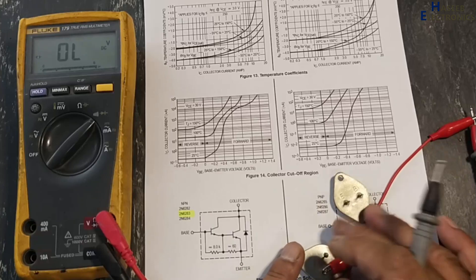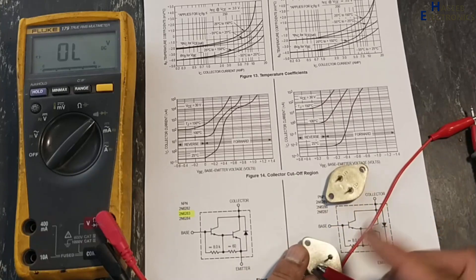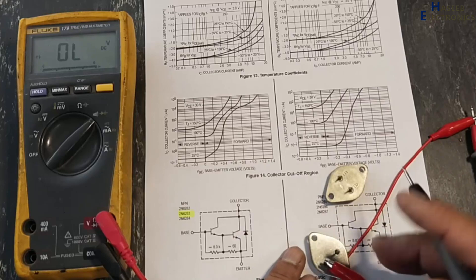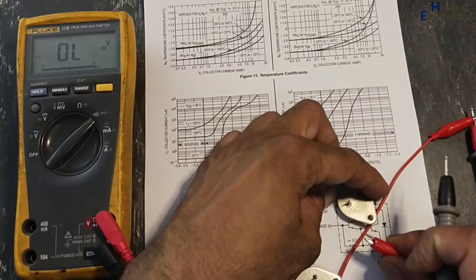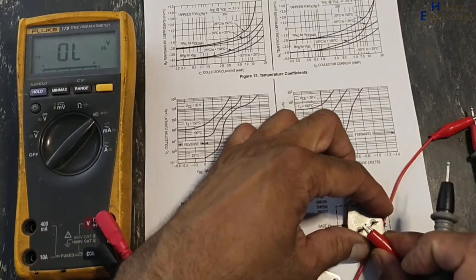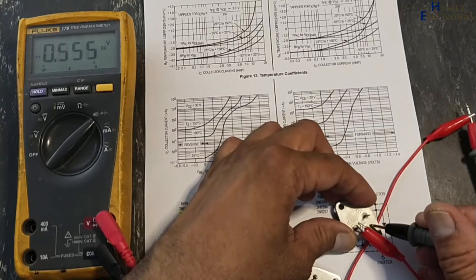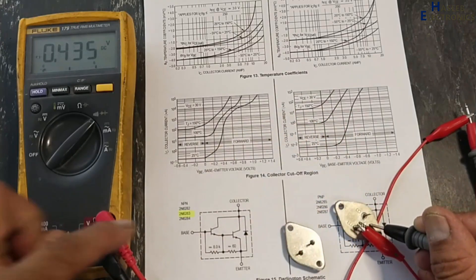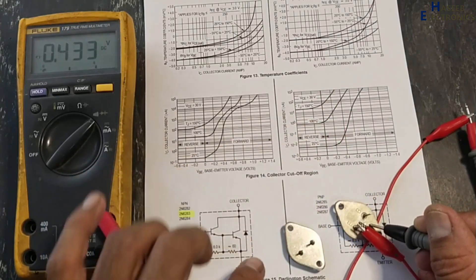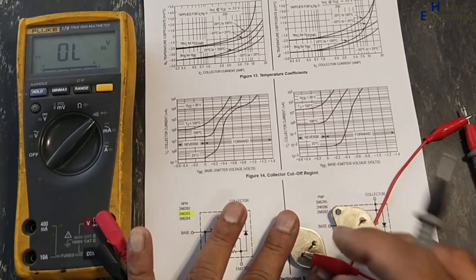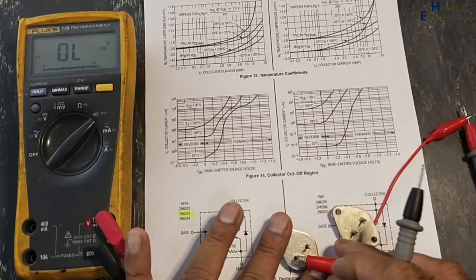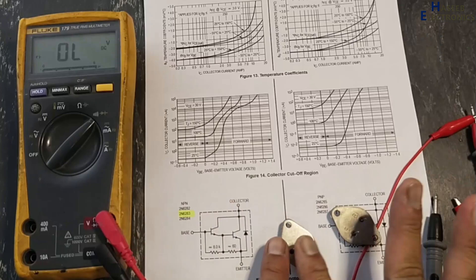If we place red lead at emitter, black at collector, it is not giving reading. But if we check this one, here is emitter, here is collector, this diode. But in this transistor, this diode is also damaged, so this transistor is bad.